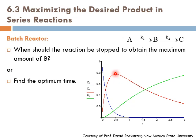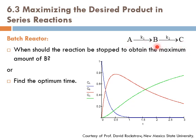At the maximum, the rate of production of B equals the rate of consumption of B. After that, the concentration of A has decreased a lot, while the concentration of B is appreciably high. Therefore, the rate at which B is consumed through the second reaction is high due to the high concentration of B, while the rate of production of B through the first reaction is low due to the low concentration of A. As a result, B is consumed faster than it is produced, so the concentration of B continues decreasing.